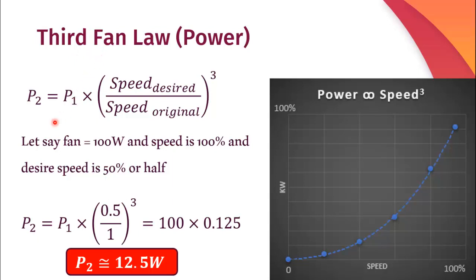In this relation, P2 is the power consumed by the fan at the desired speed, P1 is the original power consumed at the rated speed. Speed desired is the new set speed and speed original is the maximum speed of the fan.